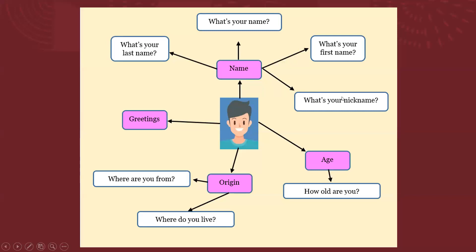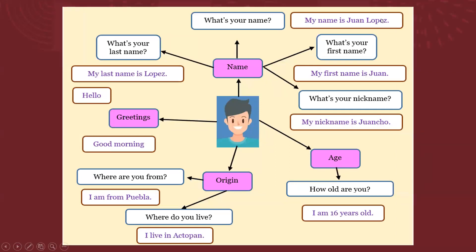Entonces, si tú quieres que te llamen, por ejemplo lo que tenemos en el ejemplo, dices: 'My name is Juan López. My last name is López. My first name is Juan.' Pero, ¿qué pasa aquí? Yo sí quiero que me llamen como me apodan desde pequeño, estoy acostumbrado. Entonces, yo menciono en mi presentación, en my self-introduction: 'My nickname is Juancho', es decir, mi apodo es Juancho. O también puedes decir: 'But you can call me Juancho', 'they call me Juancho', o 'you can call me Juancho.'